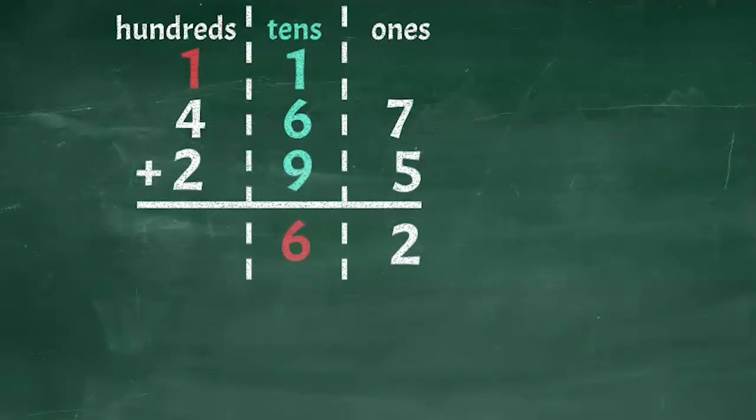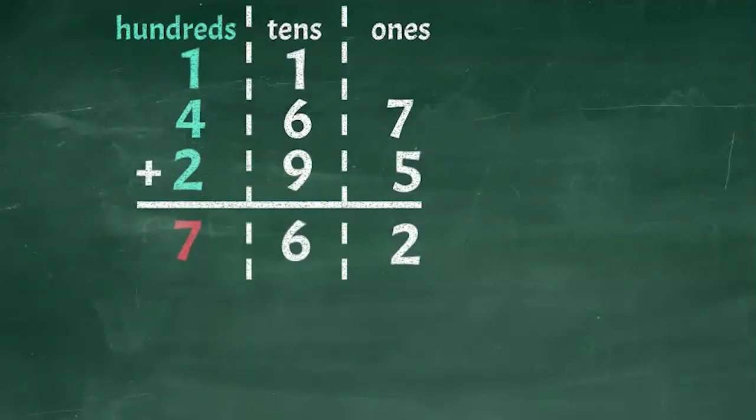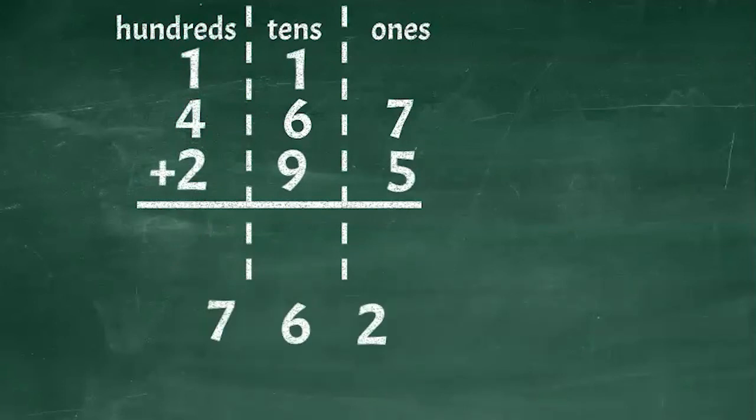Excellent. Now we just have the hundreds place to add. Again, there are three numbers to add in this stack. 1 plus 4 plus 2 equals 7. We'll just write the 7 below the hundreds place. And then, voila. We have our sum.